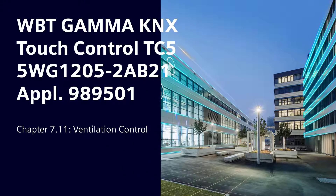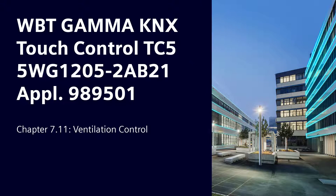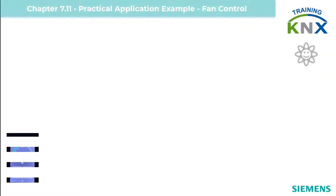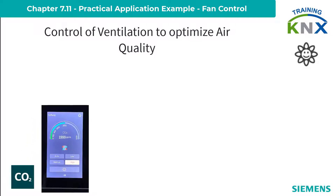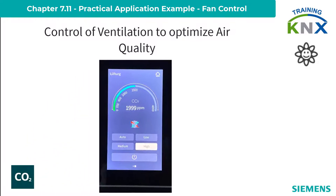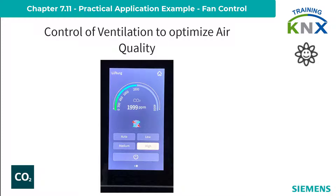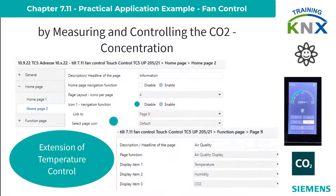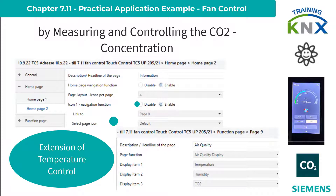Chapter 7.11: Siemens Gamma KNX Touch Control TC5 Ventilation Control. After putting the temperature control into operation in Chapter 7.10, we now need to optimize the air quality to perfect the room climate. One of the decisive factors is the carbon dioxide concentration. We want to use the CO2 value already used on function page 9 on main page 2, now on another page of main page 1, to control an air damper that can be positioned in three stages.